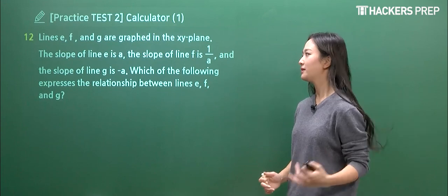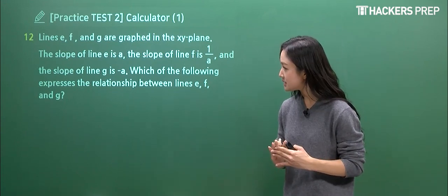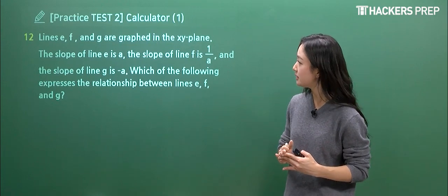So let's move on to question number twelve. Let's read along and try to figure out what they're telling us. So we have three lines, E, F, G, and they're graphed in the X, Y plane.